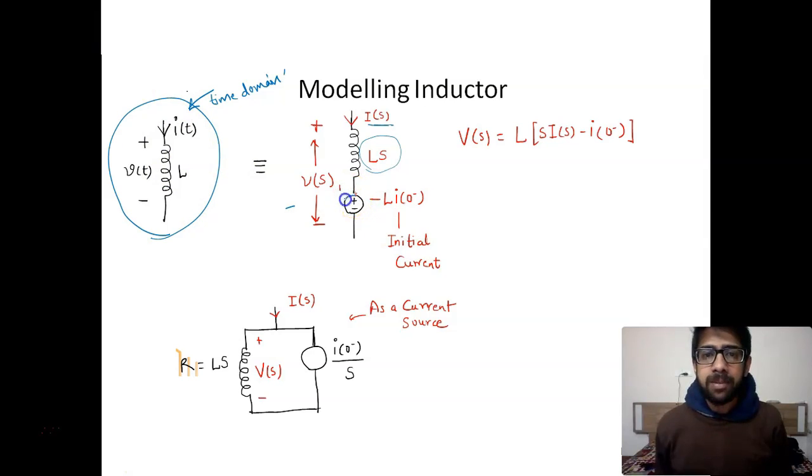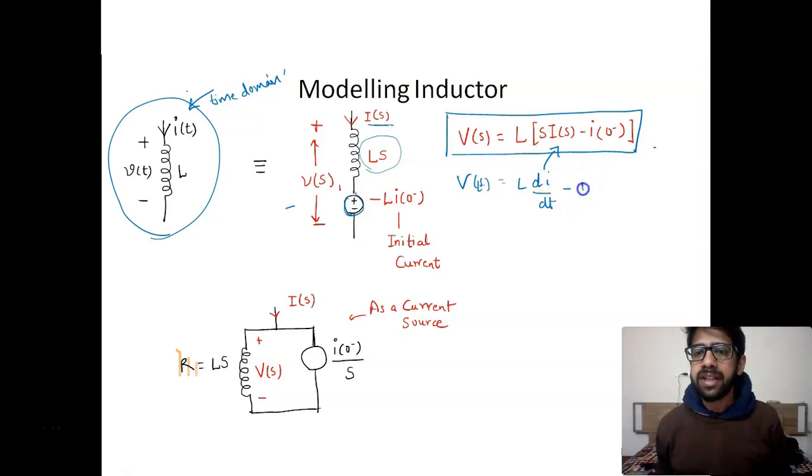So it happens to be adding one voltage source opposite to the current direction, which is of the value minus L times i of 0 minus. 0 minus is nothing but the initial current, and you can see this happening in this particular equation. Basically, V of t is L di by dt, right? So this di by dt is converted into s times I of s, and this is the initial condition that we have added. When L multiplies inside, you get this constant, and this constant has the dimensions same as voltage. Hence this is a voltage source, and with negative sign it is acting opposite. So if you have some initial conditions, you will add one voltage source with this one.